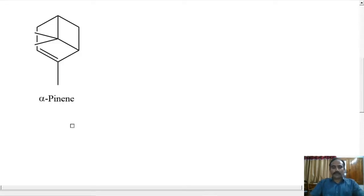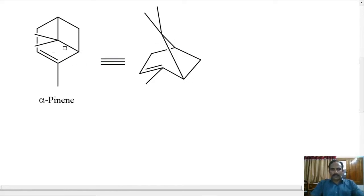The synthesis starts from alpha-pinene. This is the structure of alpha-pinene. We can write it in a different style. Both molecular structures are the same, equivalent.